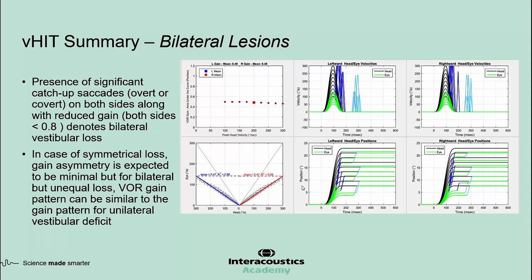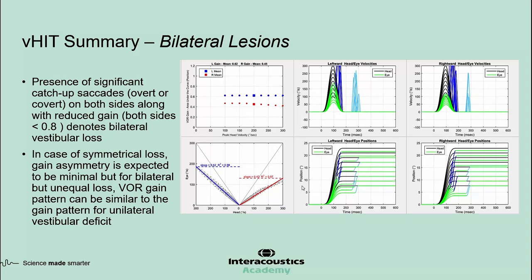The bilateral loss pattern is characterized by the presence of significant catch-up saccades on both sides along with reduced gain bilaterally, usually less than 0.8. Catch-up saccades can be overt or covert. In cases of symmetrical loss, gain asymmetry is expected to be minimal, but for bilateral losses that are unequal, the VOR gain pattern can be similar to the pattern for unilateral vestibular deficits. If the sum of the right and left VOR gains is less than 1, there must be loss on both sides.